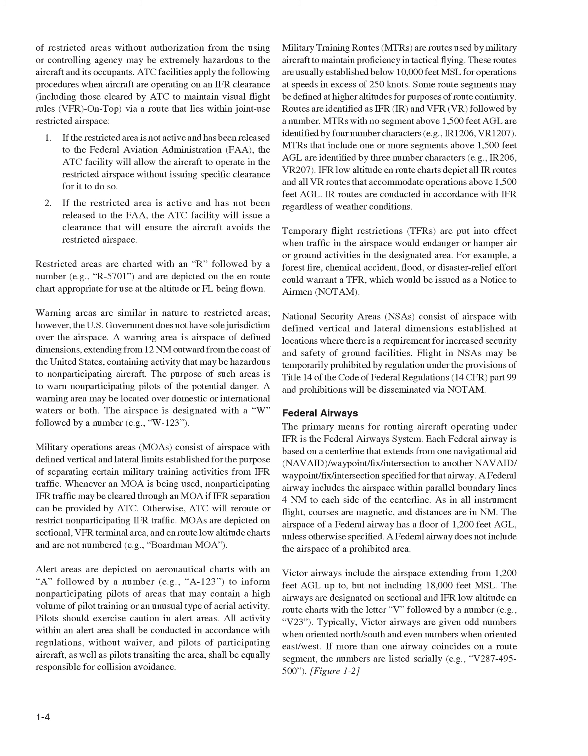Federal Airways: the primary means for routing aircraft operating under IFR is the Federal Airways system. Each Federal Airway is based on a centerline that extends from one navigational aid, NAVAID/waypoint/fix/intersection, to another specified for that airway. A Federal Airway includes the airspace within parallel boundary lines 4 NM to each side of the centerline. Courses are magnetic and distances are in NM. The airspace of a Federal Airway has a floor of 1,200 feet AGL, unless otherwise specified. A Federal Airway does not include the airspace of a prohibited area. Victor Airways include the airspace extending from 1,200 feet AGL up to, but not including, 18,000 feet MSL. The airways are designated on sectional and IFR low-altitude on-route charts with the letter V followed by a number, for example V23.